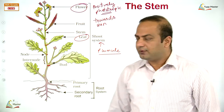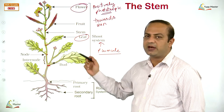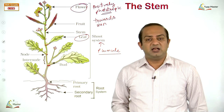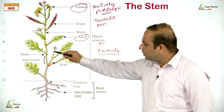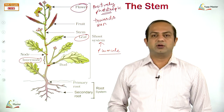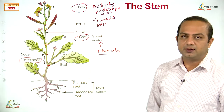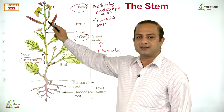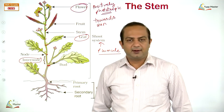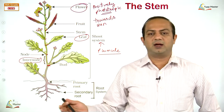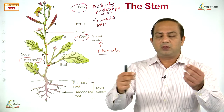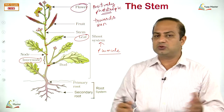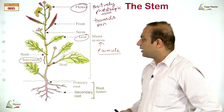The node is where you observe branches and leaves arising. The internode is the zone between two nodes. You can easily see this in sugarcane, maize, or grass stems — the band-like structures on the stem are nodes bearing leaves or branches.